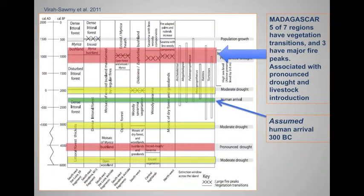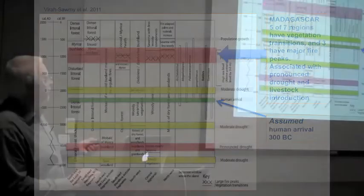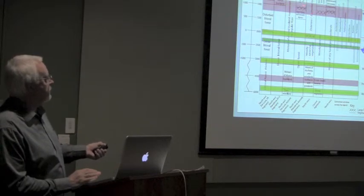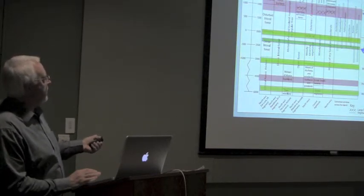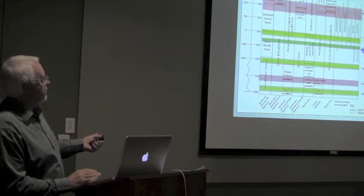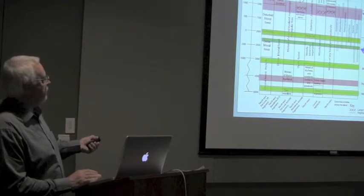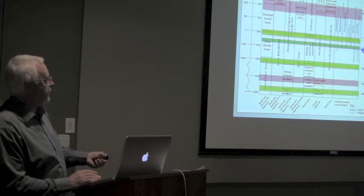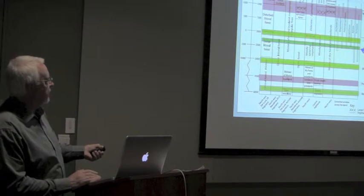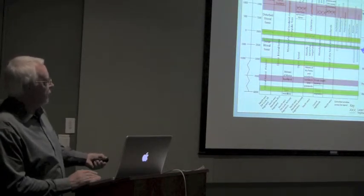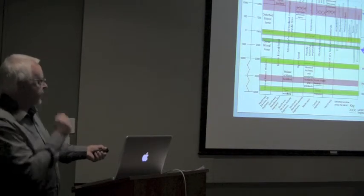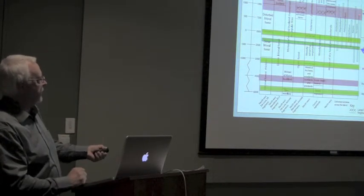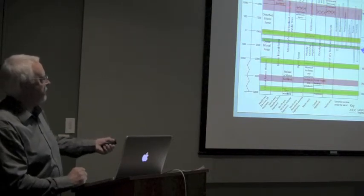A recent paper has argued that the main period of transition in vegetation and the main burning events are here at around 1000 AD give or take 200 years, when you have five of the seven regions, these are all the regions of Madagascar across here, have major vegetation transitions and three of them also have major fire peaks. There is one of these fire peaks down around 2000 just here but as I say it's in the southwest region. The authors of this paper assumed that people had arrived 300 BC, but one could argue equally I think that if you take that assumption away then the actual evidence would suggest that it's around this point.